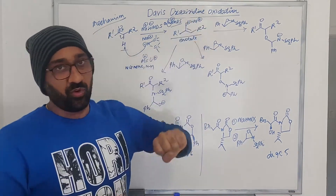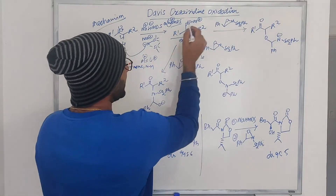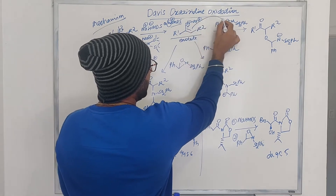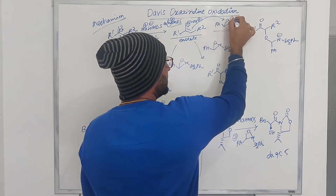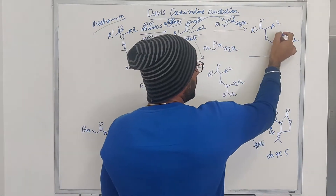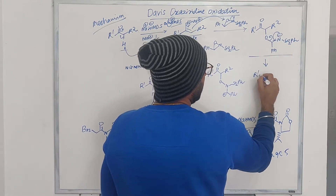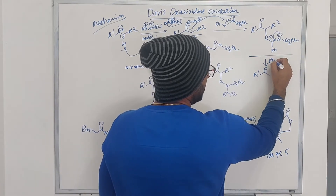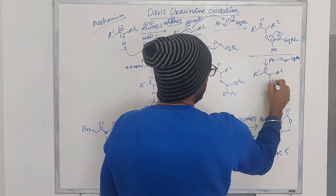Once the enolate is formed, you have the oxaziridine reagent ready. The oxygen of the enolate attacks the oxygen of the oxaziridine. Since the nitrogen-oxygen bond is very weak, it opens up easily. The nitrogen then comes back and this leaves, so what you form is the alpha hydroxylated product. The amine exits the system and what you get is the alpha hydroxylation product. This is how you get the desired product.